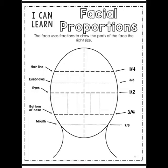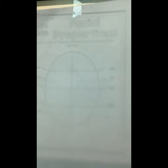So our face is divided into quarters. We've got the hairline in the top quarter, we have the eyes in the middle, we have the bottom of the nose is at the three-quarter mark, and of course the mouth is in the middle of the bottom quarter.